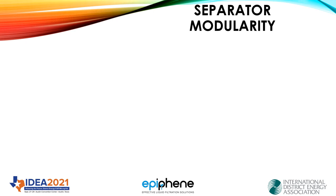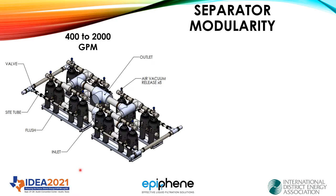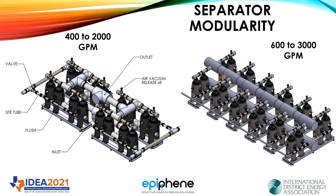Let's look at some other options for modularity where we can dramatically increase the flow and scale. Here we have two of those units in a slightly different configuration — we can change the inlet and outlet directions and add crosses so that we could actually add multiple units. Here's an example of multiple units with crosses — this is like five meters long and can handle anywhere from 600 to 3,000 gallons a minute.